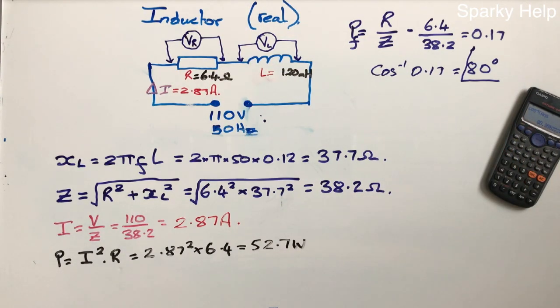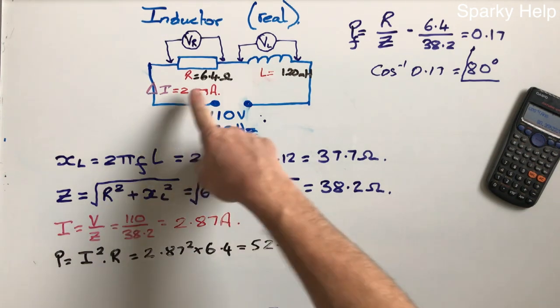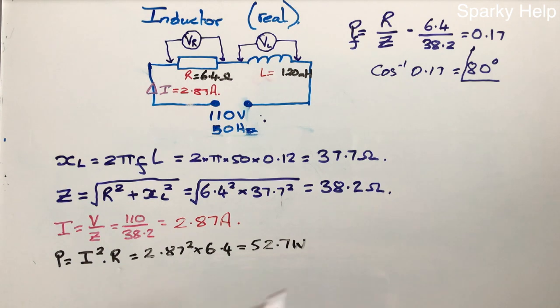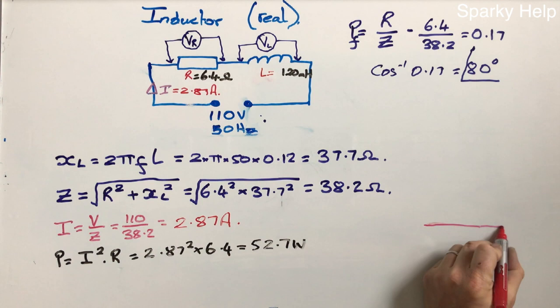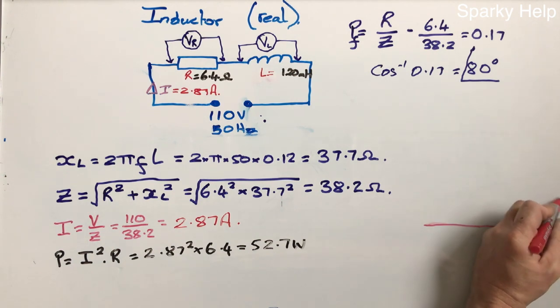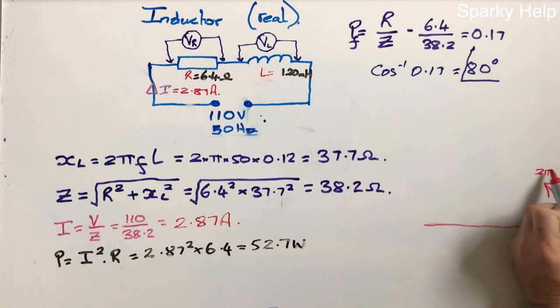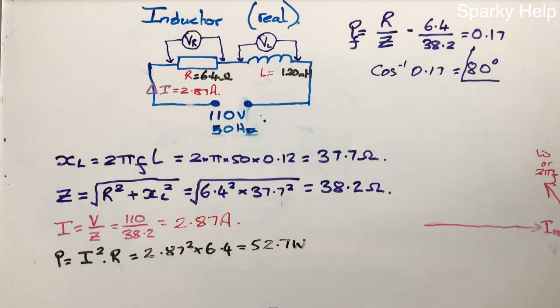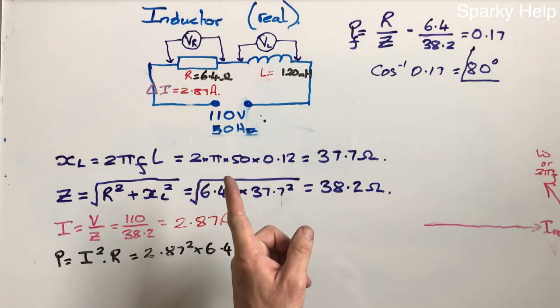We can now sketch a phasor diagram to represent that. So this is a series circuit, so in a series circuit we make current the reference. Always goes horizontal, so we make I, not V, I reference. And this goes around in a direction of 2 pi f, or this omega here. So that's how much it rotates by.